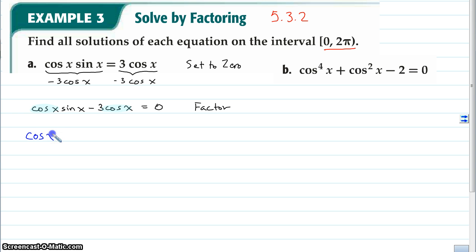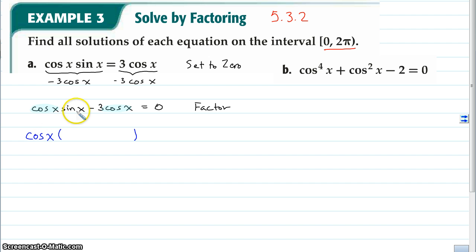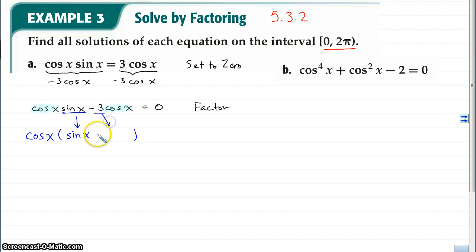The cosine x comes out to the front, and left inside the parentheses is what remains after dividing each term by cosine x. Cosine x · sine x divided by cosine x leaves just sine x. And dividing negative 3 cosine x by cosine x leaves negative 3. So I have cosine x times (sine x minus 3), and that's equal to 0.